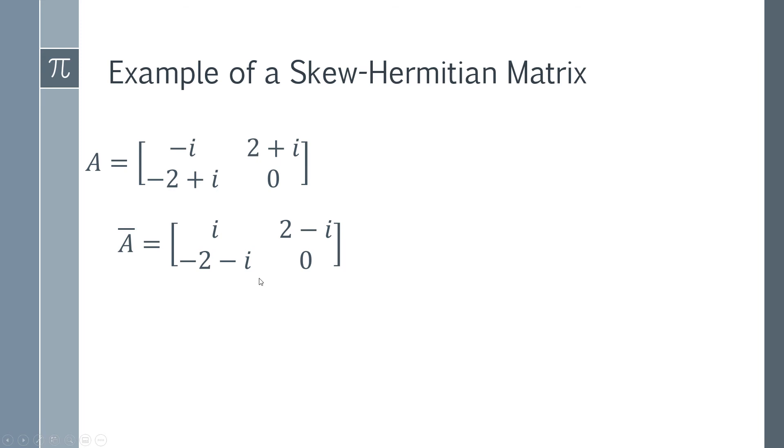This is our conjugate. Then we find the transpose: this row becomes this column, and this row becomes this column. We've now got the conjugate transpose.